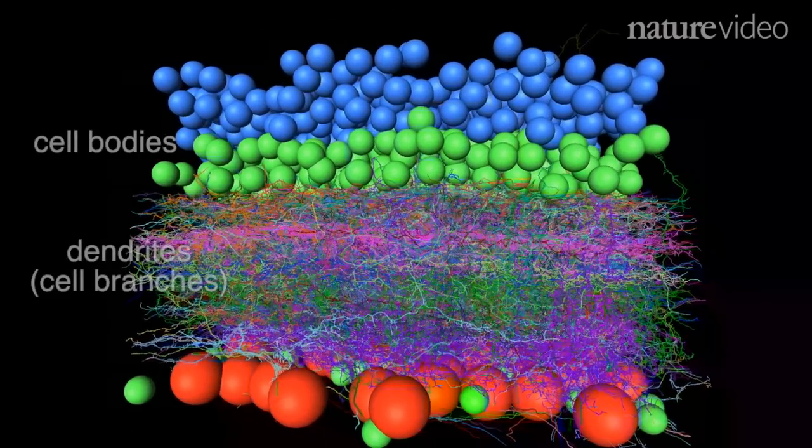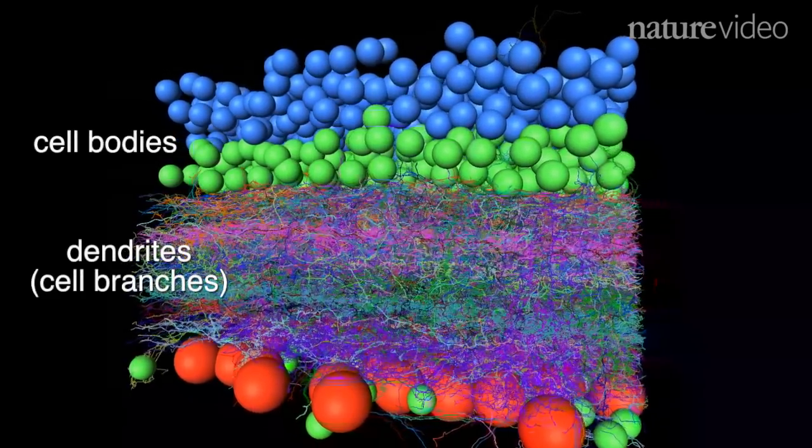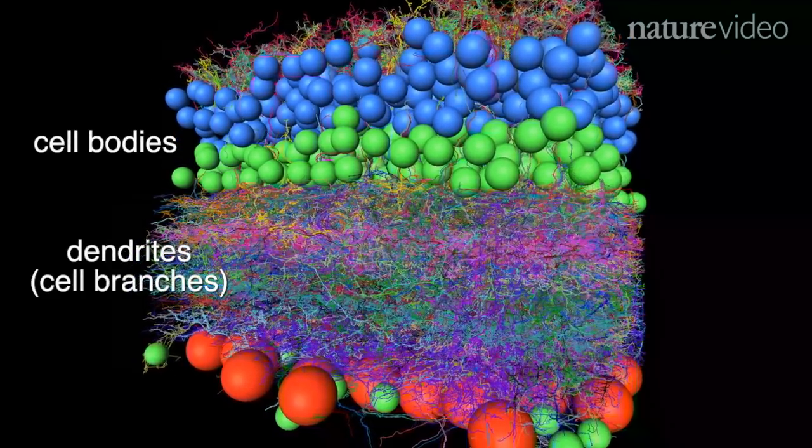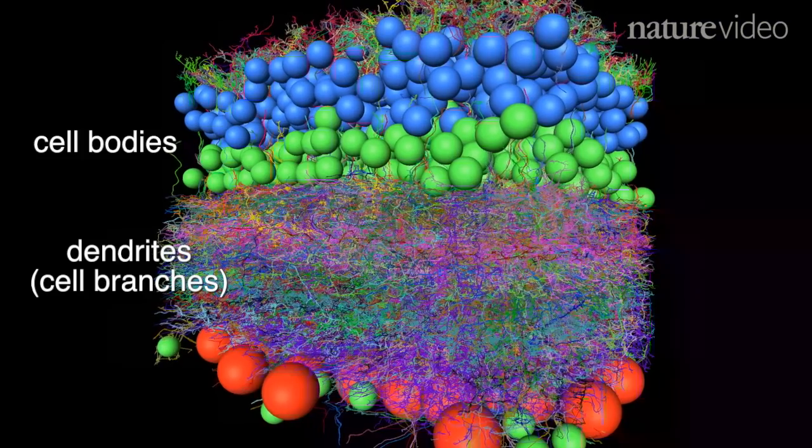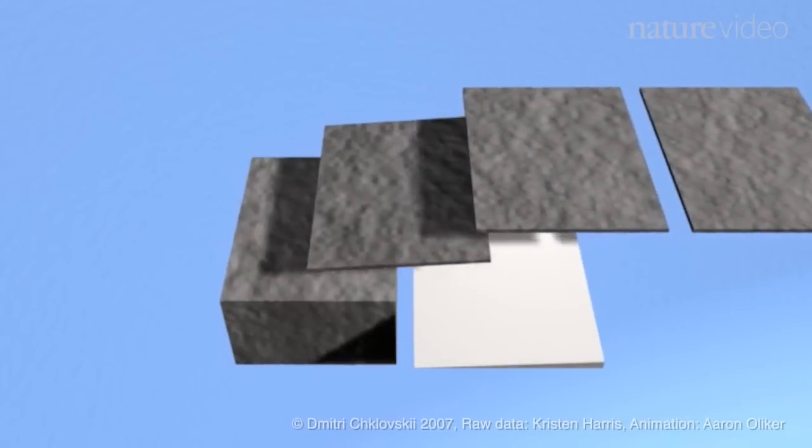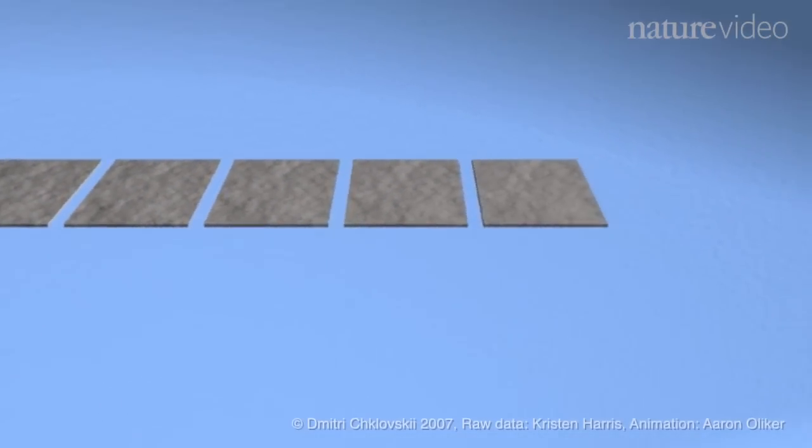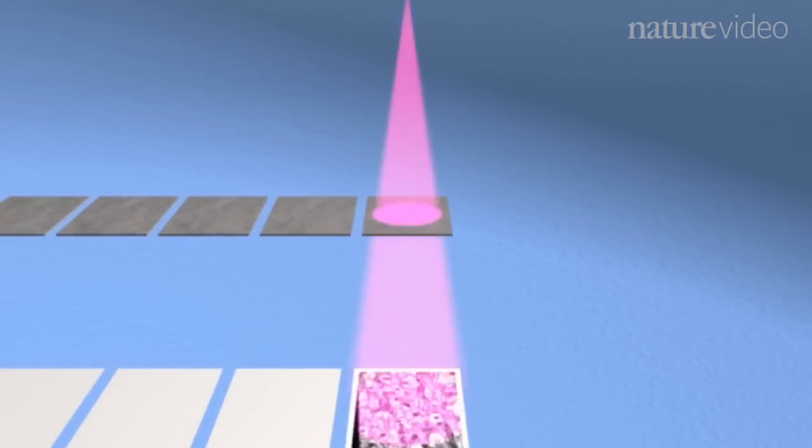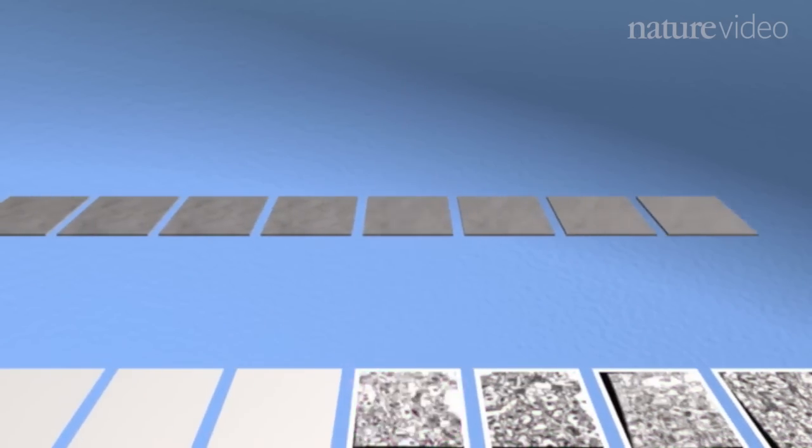This is a reconstruction of a real piece of mouse retina showing the precise shape and location of 950 cells. The researchers who made it say mapping each neuron was an almost insurmountable challenge. First, the tissue had to be sliced very thinly and imaged by an electron microscope.